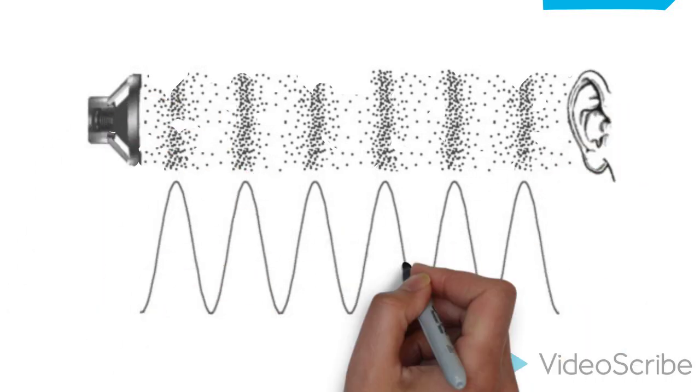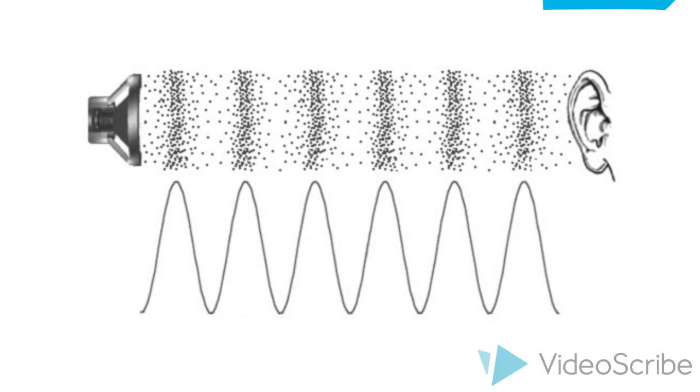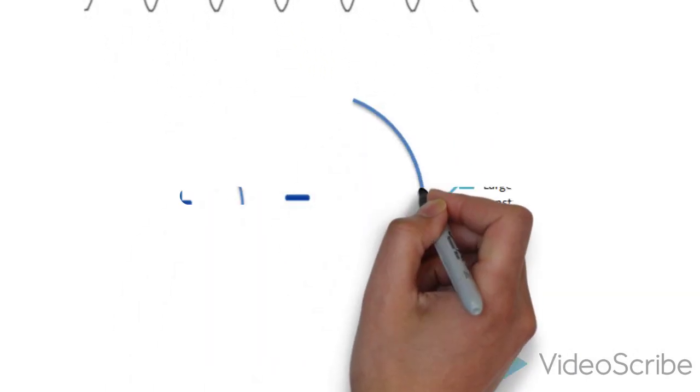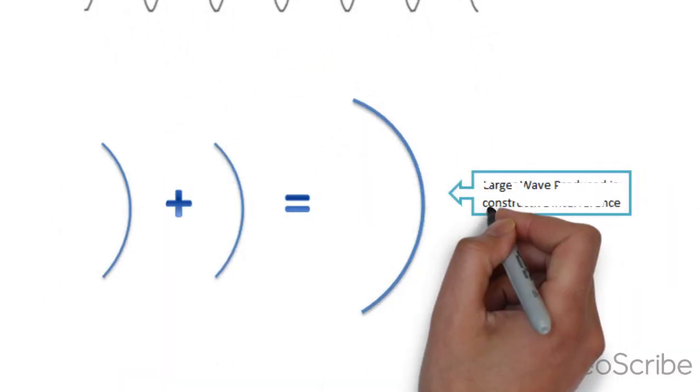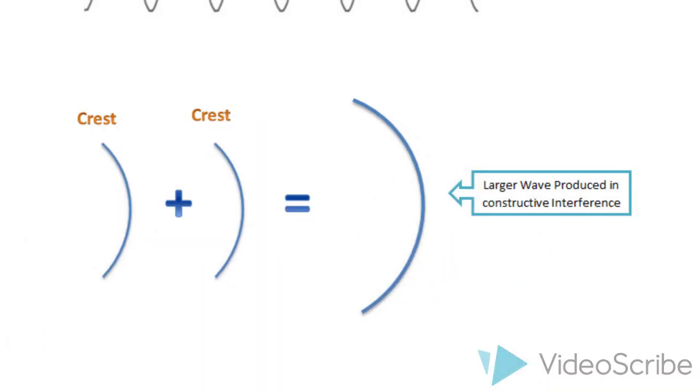We learned in class that sound waves are longitudinal waves with rarefactions and compressions made by vibrations. We also learned that when two identical waves have displacements in the same direction in the same phase, constructive interference occurs, and their amplitude is doubled.